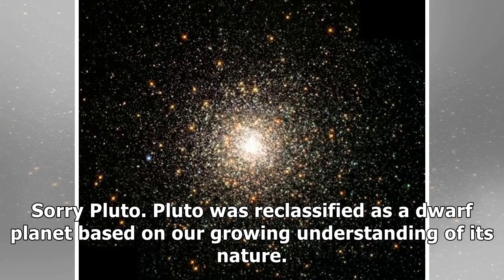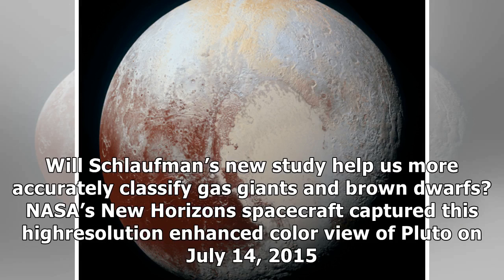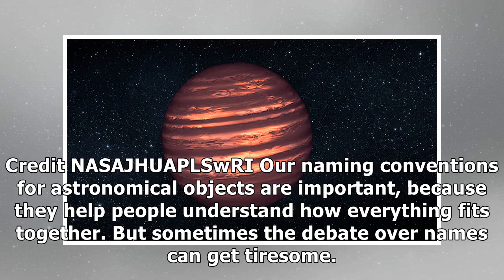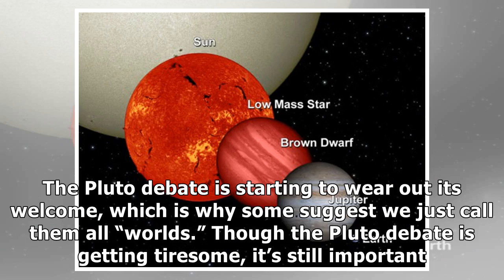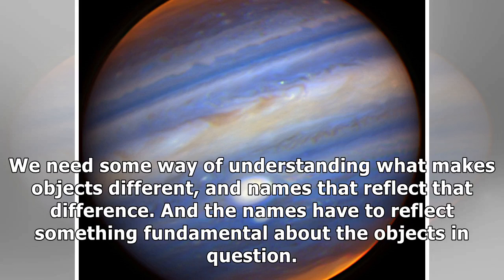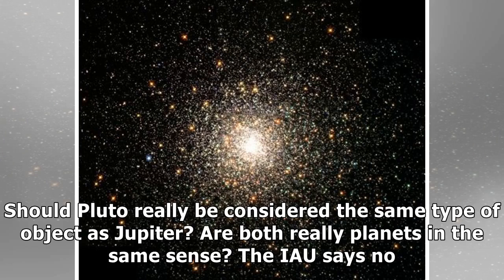Pluto was reclassified as a dwarf planet based on our growing understanding of its nature. Will Schlauffman's new study help us more accurately classify gas giants and brown dwarfs? Our naming conventions for astronomical objects are important because they help people understand how everything fits together. But sometimes the debate over names can get tiresome. The Pluto debate is starting to wear out its welcome, which is why some suggest we just call them all 'worlds.' Though the Pluto debate is getting tiresome, it's still important — we need some way of understanding what makes objects different, and names that reflect that difference. Should Pluto really be considered the same type of object as Jupiter? The IAU says no.